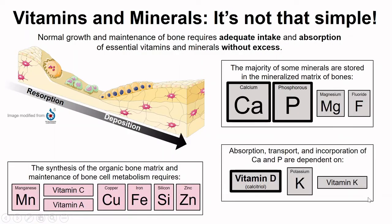Here I'm going to take us on a bit of a tangent. This goes beyond what is testable for the course, but I want to note that calcium phosphate and vitamin D are not the only vitamins and minerals essential for bone health. The maintenance of bone requires the intake and absorption of many essential vitamins and minerals. However, excess can lead to the opposite effect, so balance is key. Along with calcium and phosphate, magnesium and fluoride can be directly stored in that bone matrix.